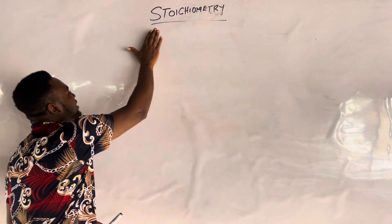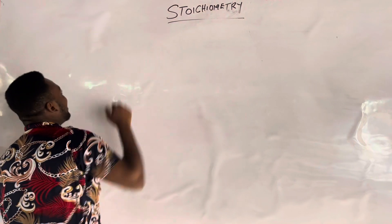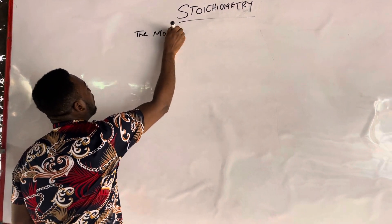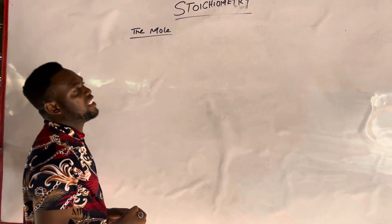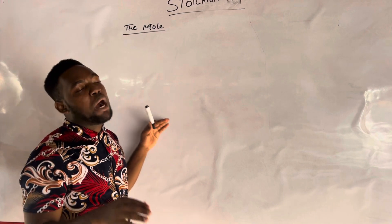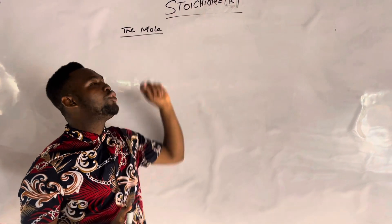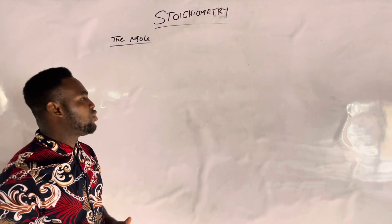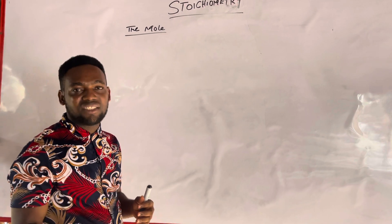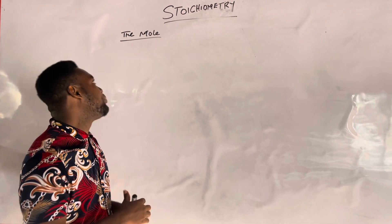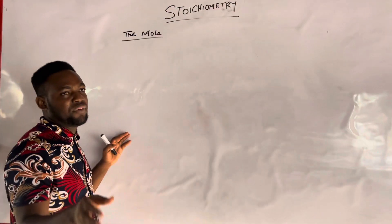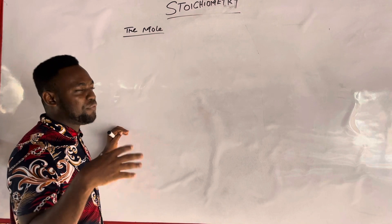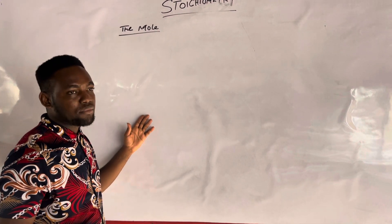I'm going to divide stoichiometry into three parts. Part one I will call the mole — that's the starting part. In the next video, part two will be stoichiometry of solutions, where we'll look at molarity, molality, and normality. I'll give you formulas by way of shortcuts for solving molarity, normality, and even percentages.